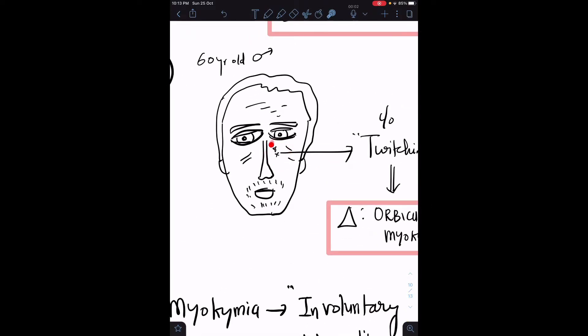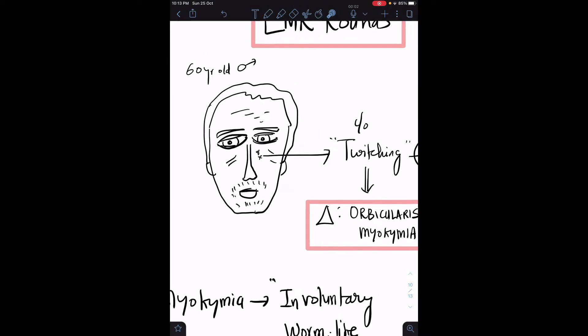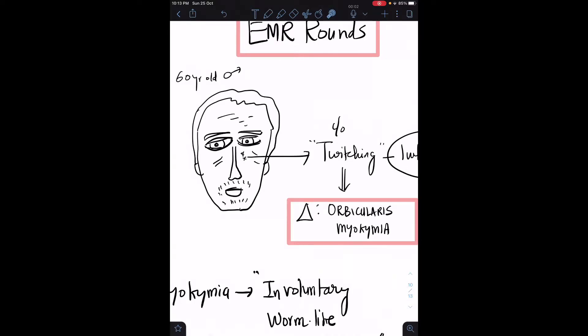Hi, welcome to the ZMR rounds. I saw this patient on Friday who came with complaints of unilateral twitching on his left eye. The patient had typical twitches below his left eye at this area exactly. He was wearing a mask, so I asked him to remove it and found very subtle, easy to miss twitches.